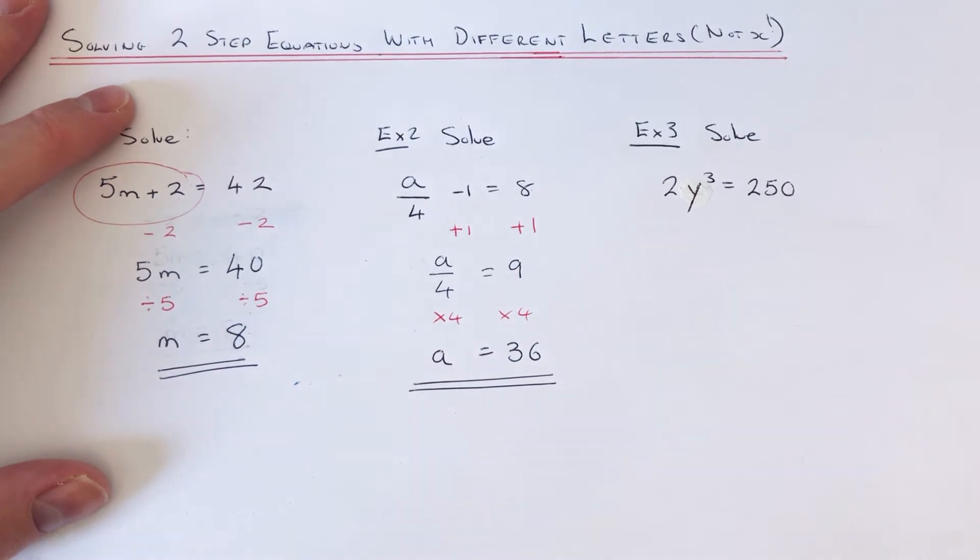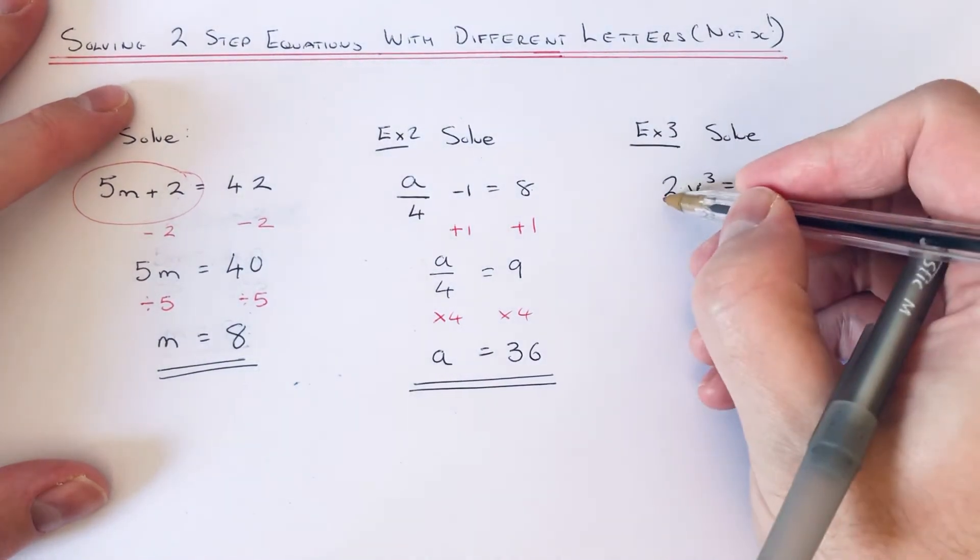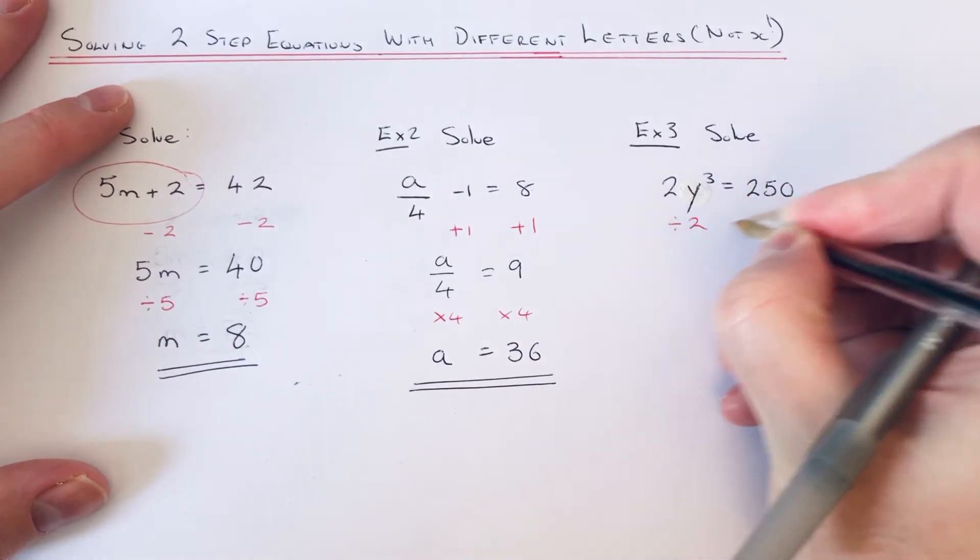Okay, so again, we just need to do the opposites in reverse. So first of all, get rid of that times 2, which is divided by 2.